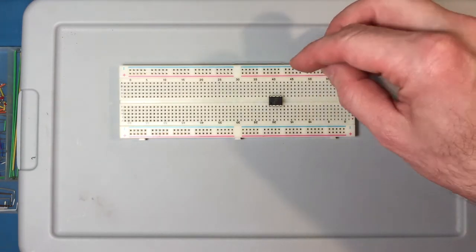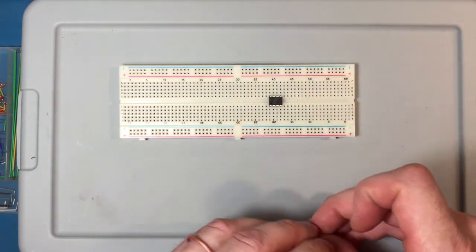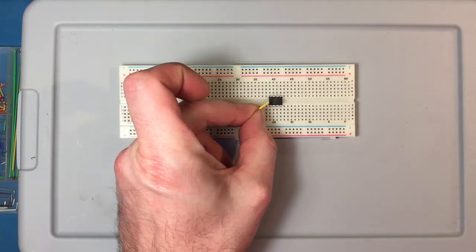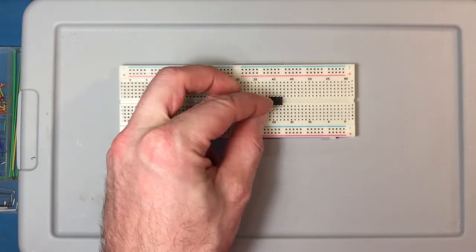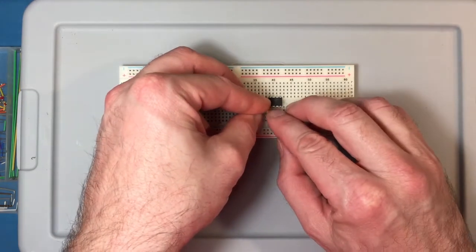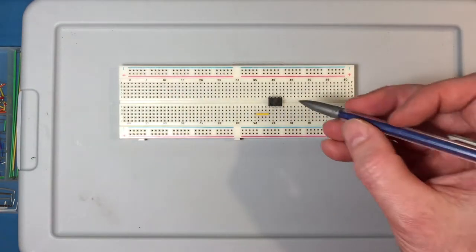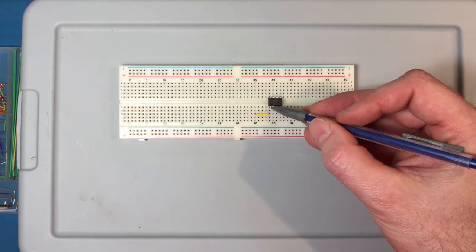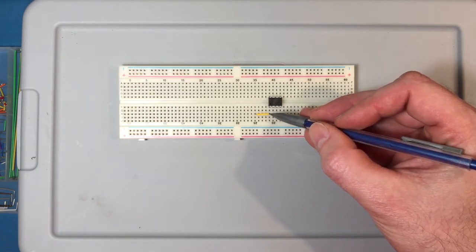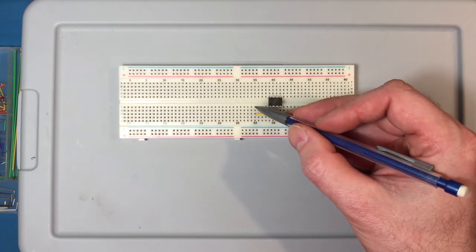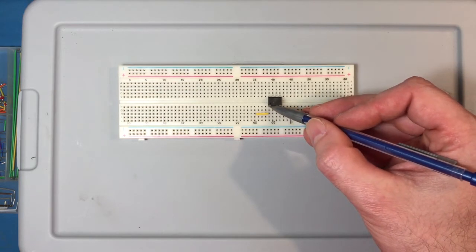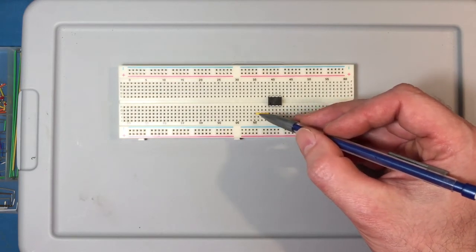A very basic thing would be, say, if we wanted to connect a wire to pin one of the op-amp, which is the one in this corner right here, I could plug in a wire like this, and now I have an electrical connection that goes from the pin to the wire, and then to this row right here. So now this row is electrically connected to that pin via that wire.